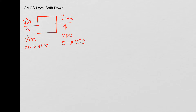As mentioned in the level shift up circuit, you can take an example of VCC = 3.6 volts and VDD = 1.2 volts. At the VDD level you can use low voltage transistors which are much smaller, and at the VCC level you might have to use higher voltage transistors. Now let's try to see how to build this circuit.